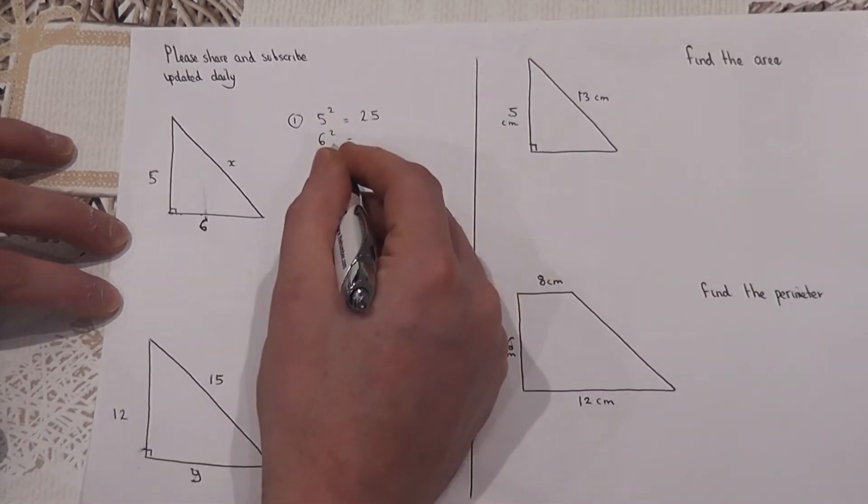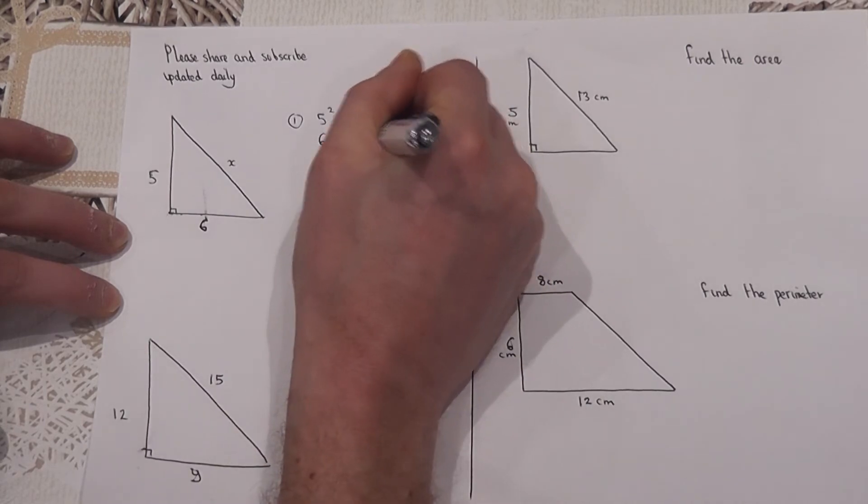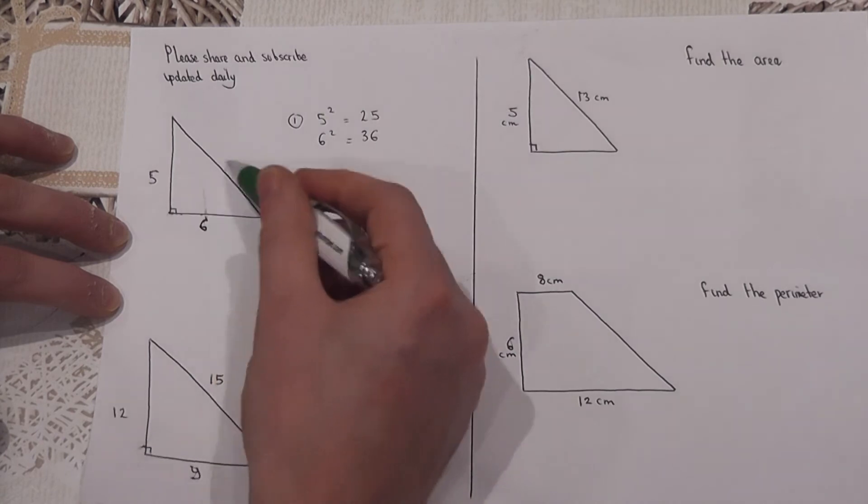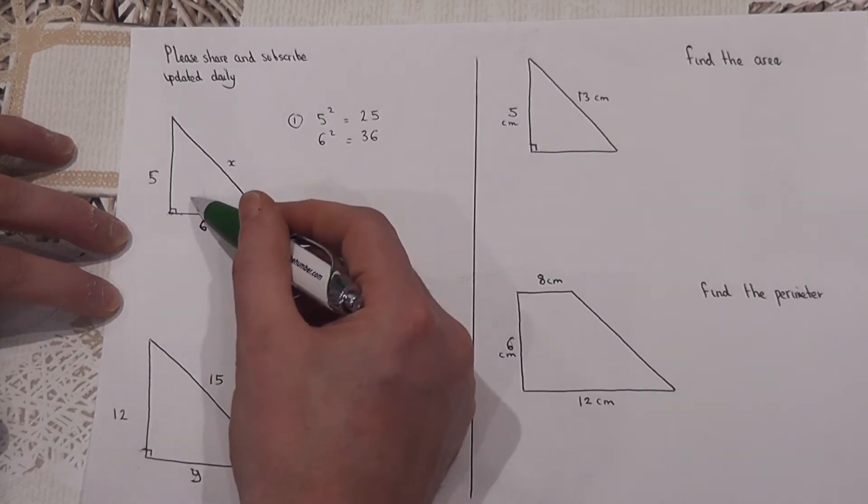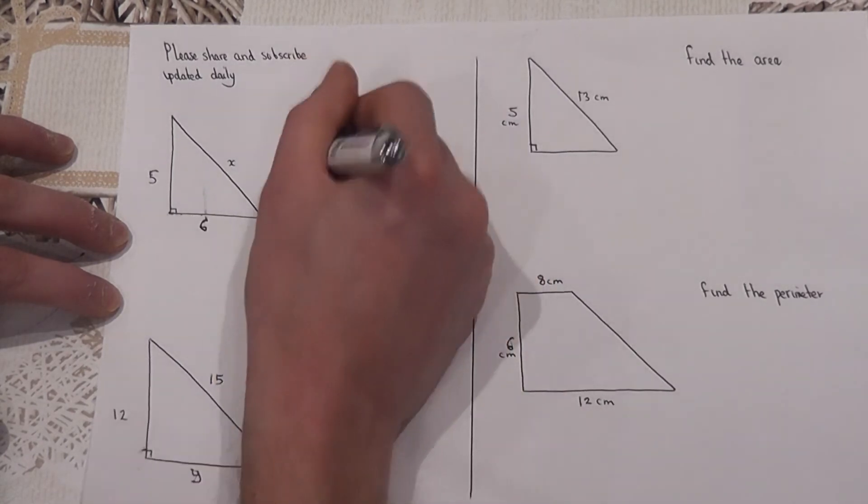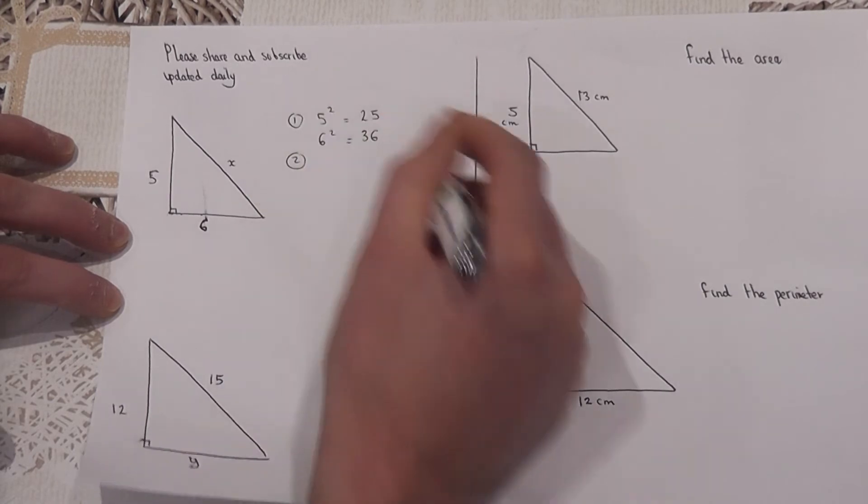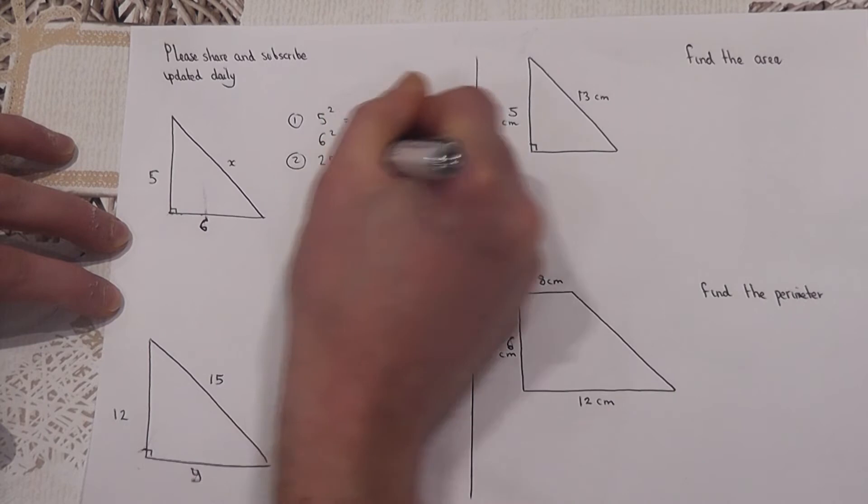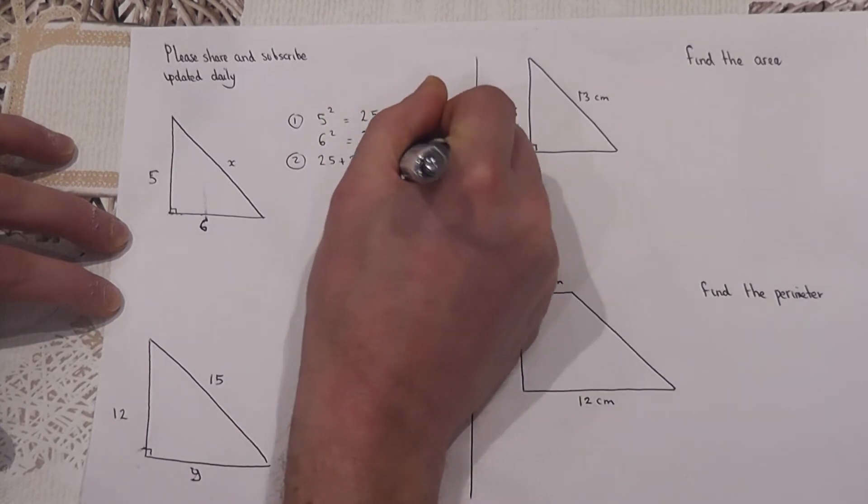5 squared is 5 times 5 which is 25. 6 squared which is 6 times 6 is 36. When we want to find the hypotenuse, the length opposite the right angle, we add together these two results, so 25 plus 36 equals 61.